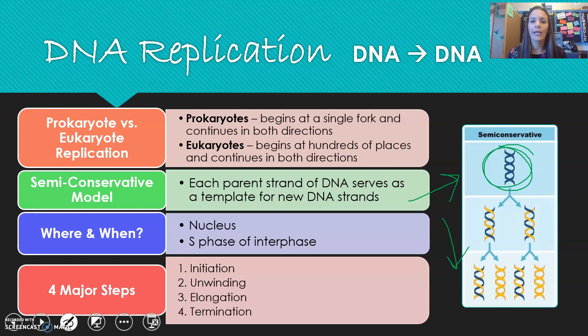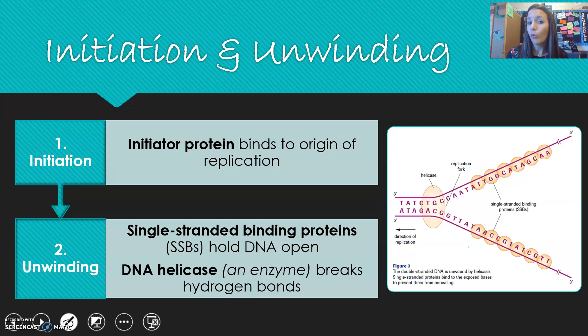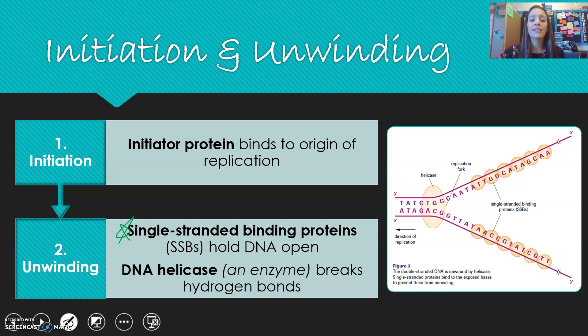During initiation, an initiator protein binds to the origin of replication. If we're a eukaryote, there are multiple origins all throughout the DNA; prokaryotes just have one. Then in the unwinding stage, single-stranded binding proteins hold the DNA open, and DNA helicase breaks those hydrogen bonds, traveling up the DNA and splitting it into two different strands so replication can occur.